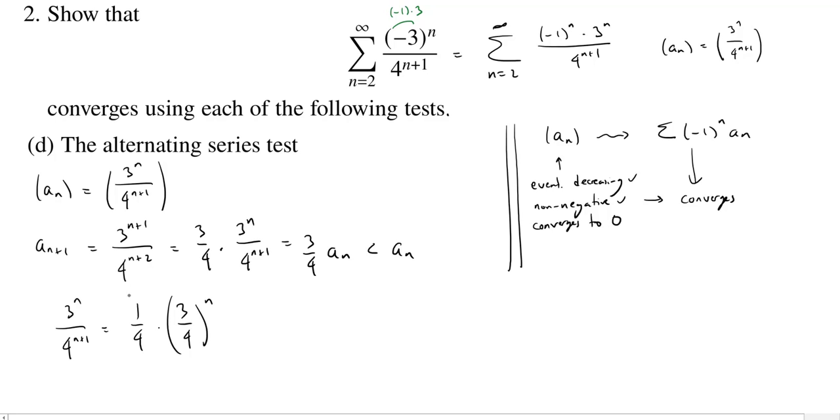then we see we're multiplying 1 fourth by a geometric sequence. Alright? And the geometric sequence, 3 fourths to the n, well, we know in general, if you have a geometric sequence, we call this g of r, where r is your ratio. We know that this converges to 0 if and only if the absolute value of r is less than 1.